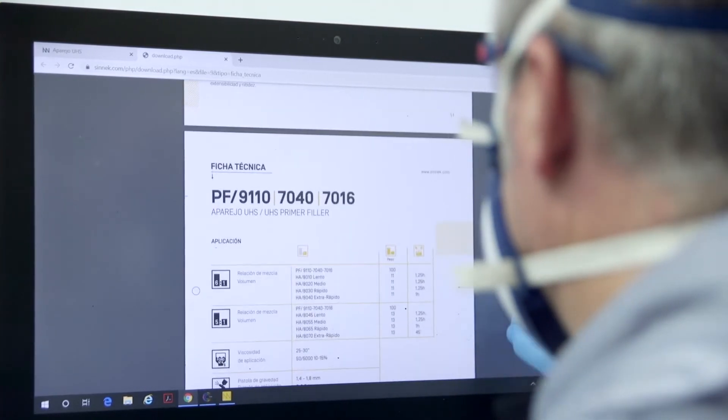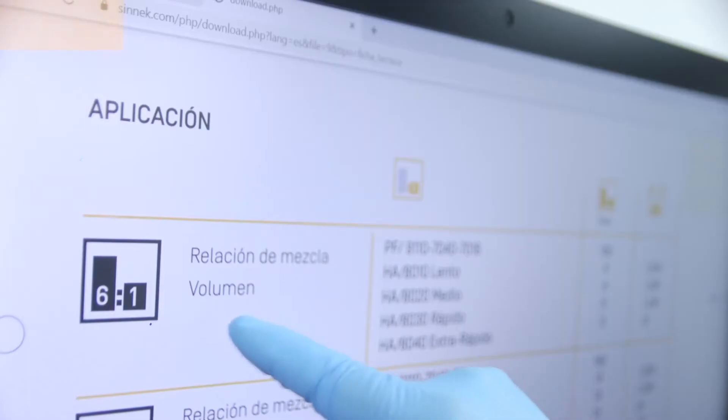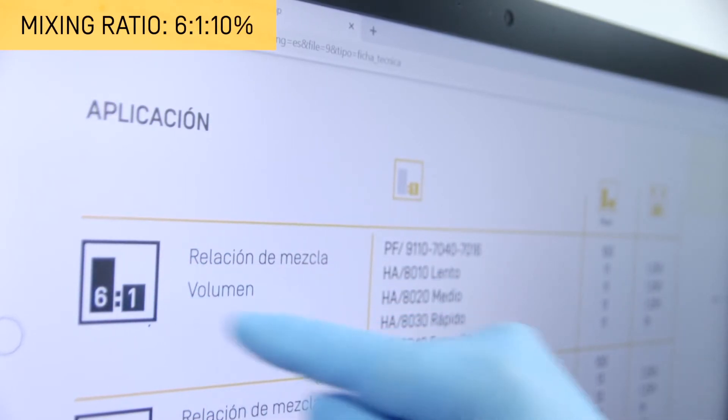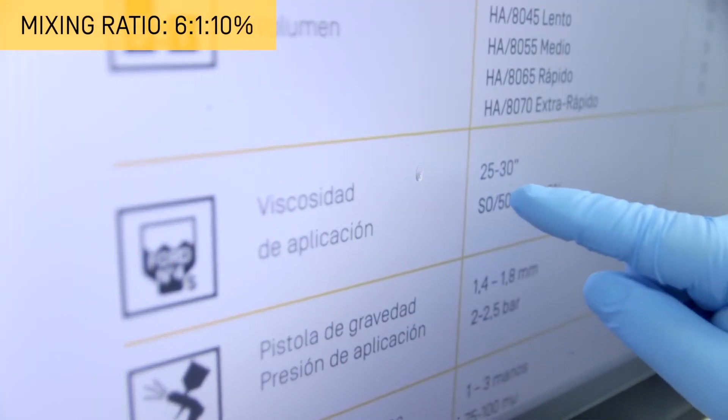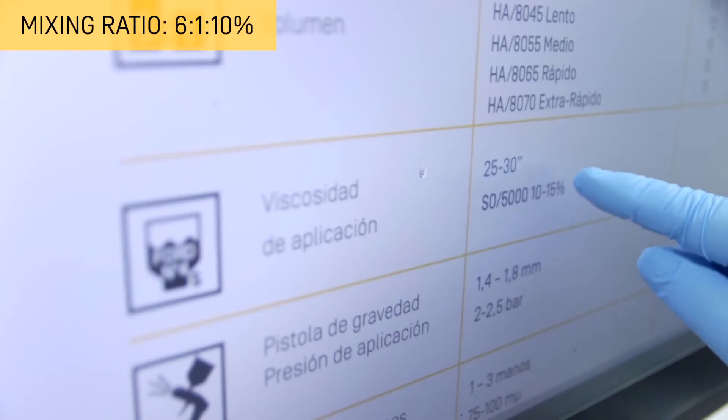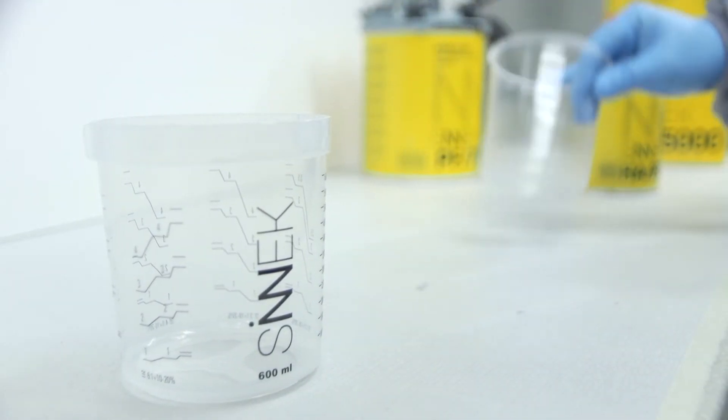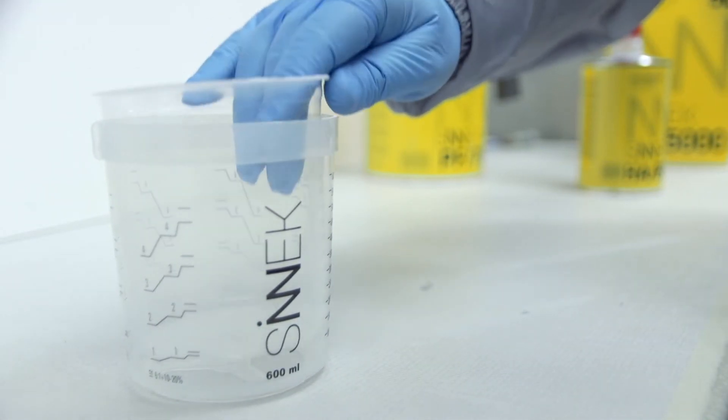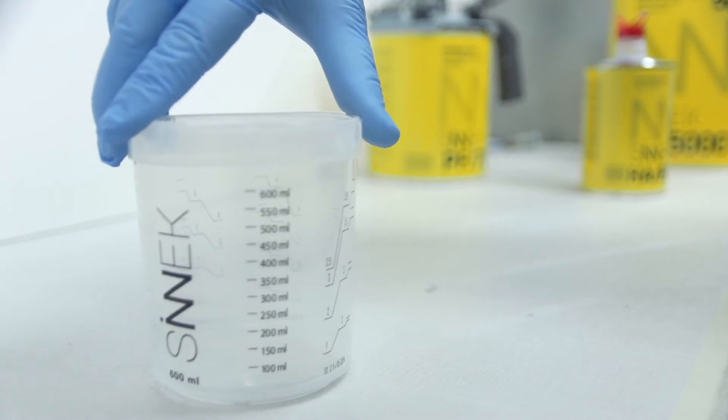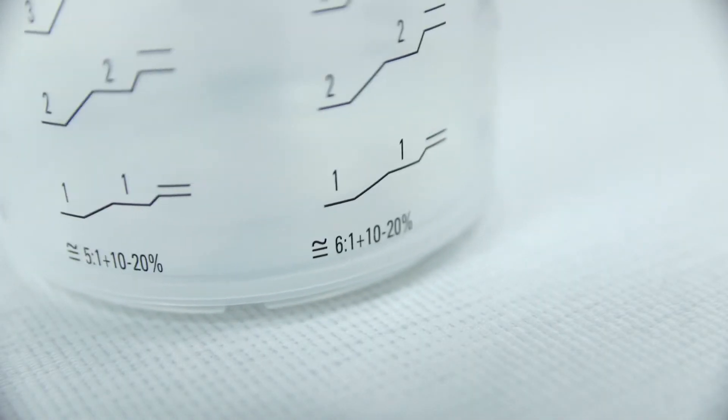Check the mixing ratio for this product in the technical data sheet. This means that you must pour six parts of paint for every one part of hardener, including 10% thinner from the total mixture.